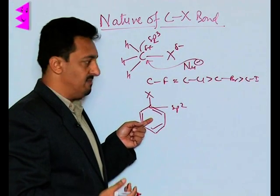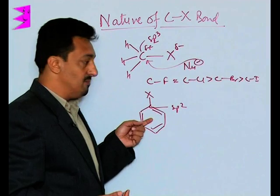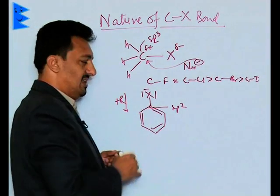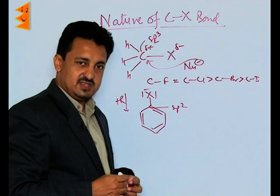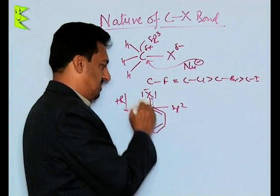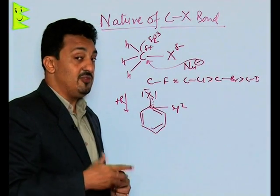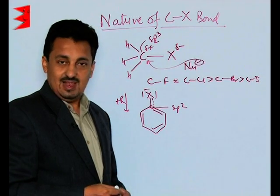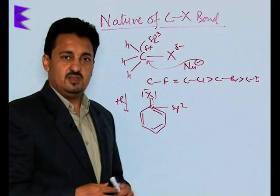It is less polar. Moreover, the halogen shows the +R effect, the plus resonance effect. As a result, the C-X bond has partial double bond character, and that is why we don't usually find nucleophilic substitution reactions shown by these aryl halides. So that is the nature of the C-X bond.